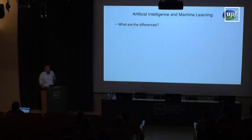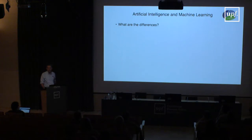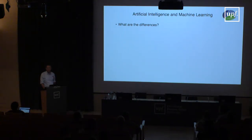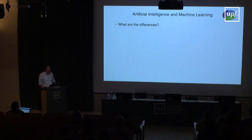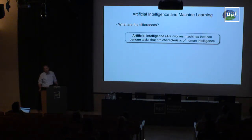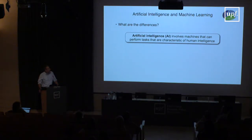I'm a computer scientist in a computer science department. I want to highlight the differences between AI and machine learning, because we have many people doing both in our department and they normally never talk to each other — in fact they don't like each other very much. If you talk to an AI person, they'll tell you what they're really trying to do is build machines which can perform tasks characteristic of human intelligence.